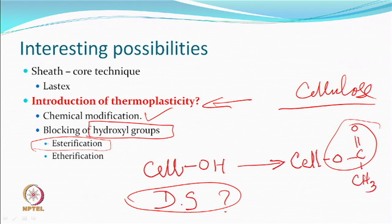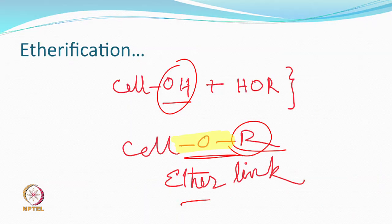Another approach is etherification — instead of making an ester you make an ether link, which also means the hydroxyl group is not available as it is. An ether link means two alcohols reacting with each other, producing an ether link. From the point of view of stability, ester links are more susceptible to alkaline conditions. Theoretically you can hydrolyze anything, but under normal washing and laundering conditions these bonds are not going to break very easily.